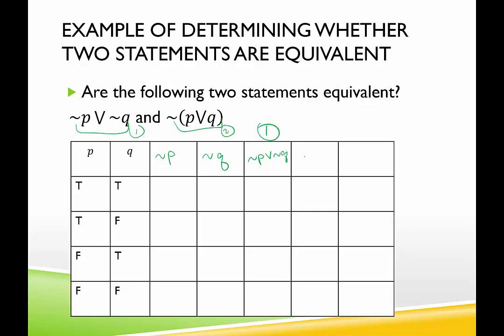For statement 2, I need P or Q, and then statement 2 itself, which is not P or Q. So to decide whether they're equivalent or not, if statement 1 is true here, statement 2 has to be true here, and if that's the case for all four rows, then they're equivalent.